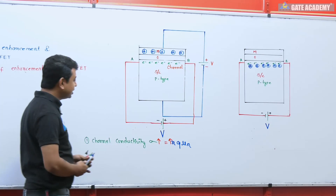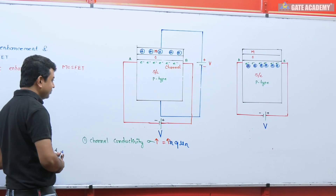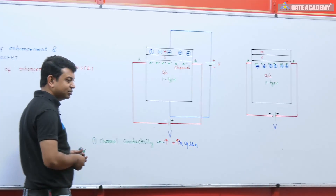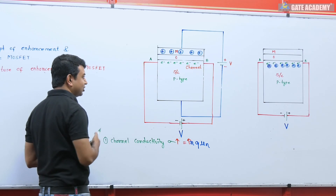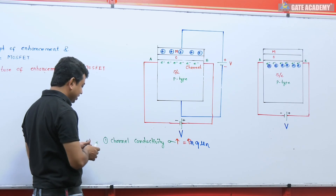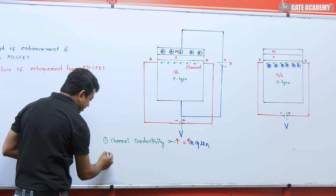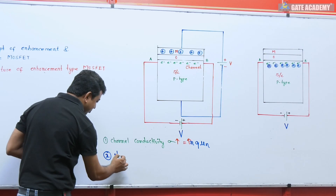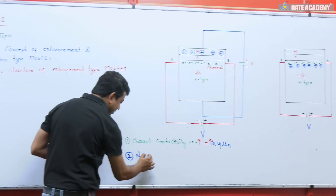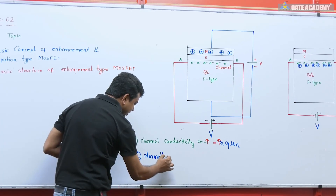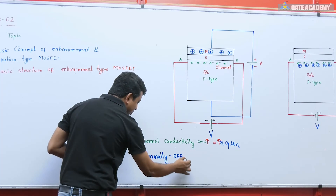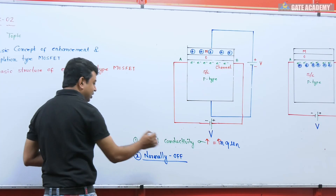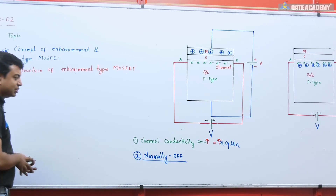Theoretically, if we are not applying this potential, the channel conductivity is reduced and we don't have any current — current is assumed to be zero theoretically. So if the channel is not induced, we can say this is the normally off condition.